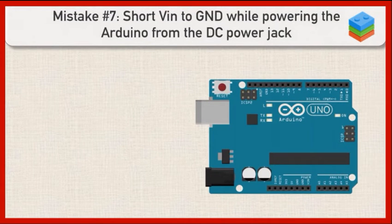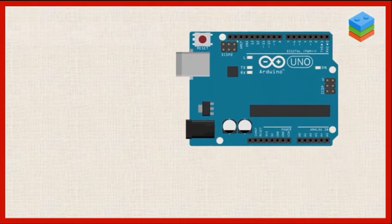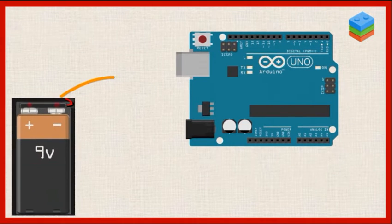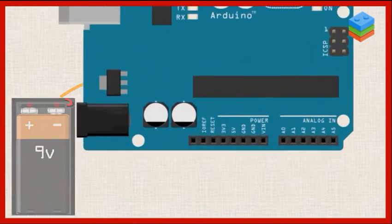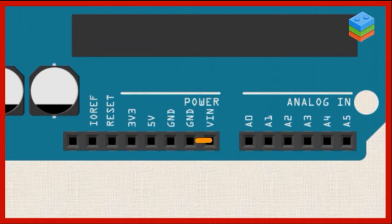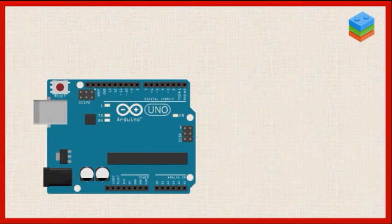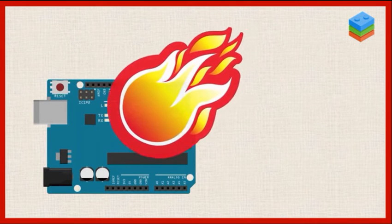Let's talk about another way that you can do some damage to your Arduino board. Let's say you have a standalone project and you want to power it using the DC power jack. Maybe you've got like a 9-volt battery supply or something like that powering your Arduino. Now, if you inadvertently connect the VIN pin to the ground pin, what essentially happens is you're short-circuiting that DC power jack input. And what that can do is exceed the current rating of a blocking diode on the Arduino.